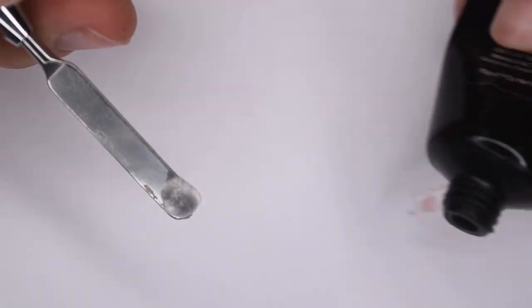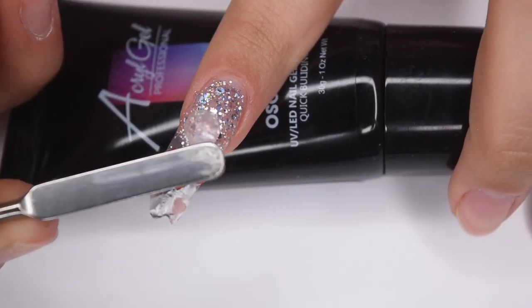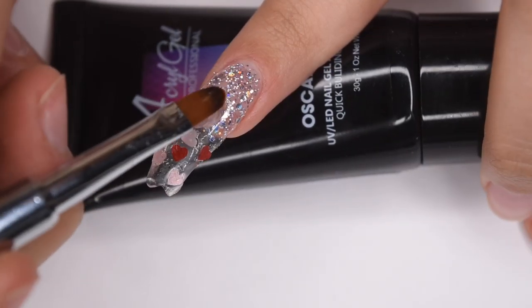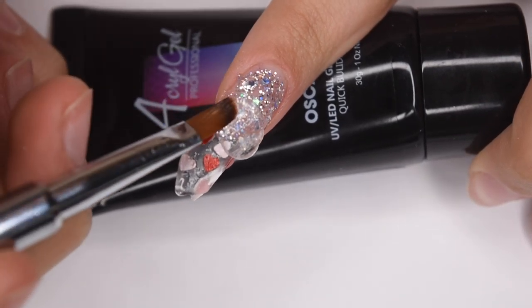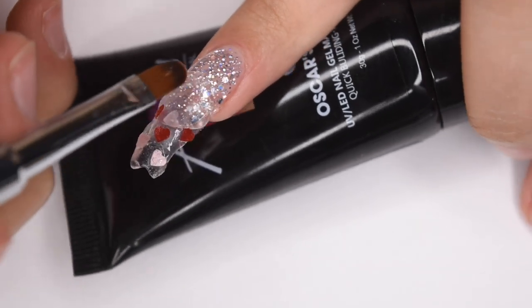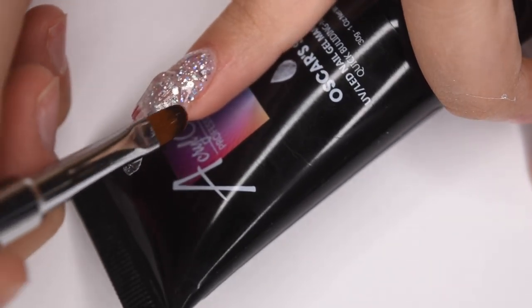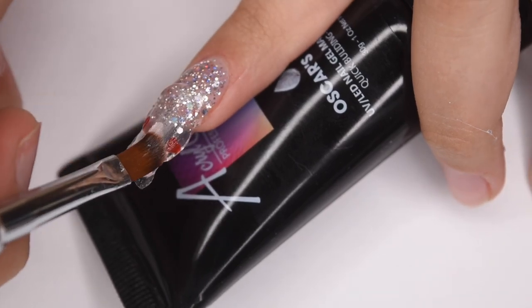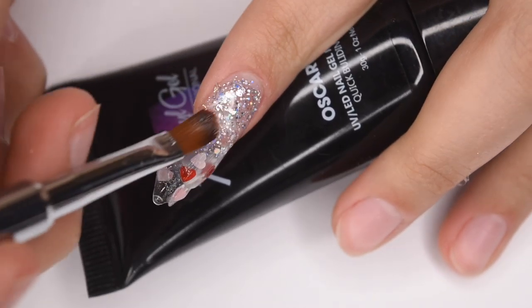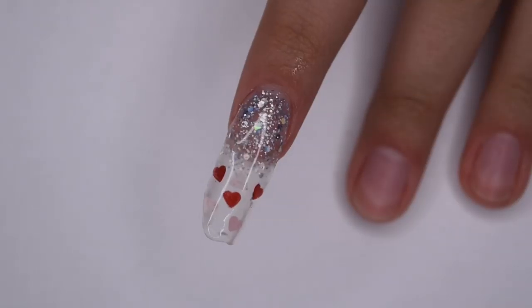And now I'm taking a bigger bead of clear and I'm going to encapsulate the whole nail. So I'm going to start here by encapsulating the glitter pieces. And then I also went back towards the base of the nail to encapsulate the glitter. And this is a really important step because it will help build structure on the nail and it will also protect all of the glitter pieces from filing.